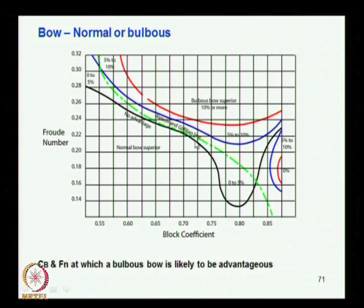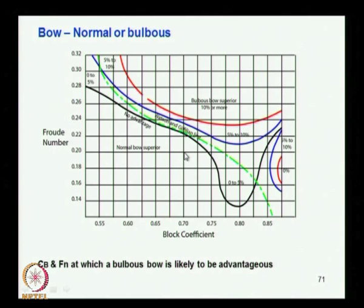Here you can see the black line indicating when the normal bow is superior. If the vessel falls in this range — say block coefficient 0.7 and Froude number 0.2 — you do not need a bulb. A normal straight stem is more advantageous than providing a bulb for vessels in that region.